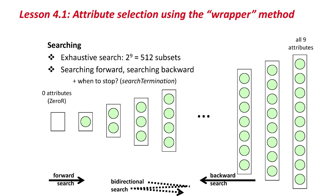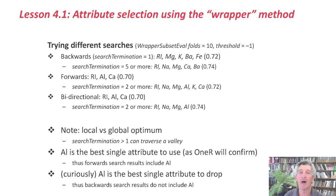The search termination criterion is kind of interesting. When we did this manually, we stopped as soon as the results started to get worse — we got a local maximum in the search space. But you might do better by plowing on through that minimum to see if perhaps you might reach an even higher peak further on. So if you set the search termination criterion to something greater than one, Weka will try a little bit harder and go a little bit further before deciding to abandon the search.